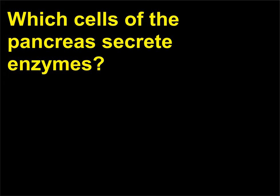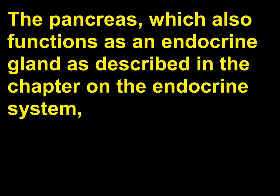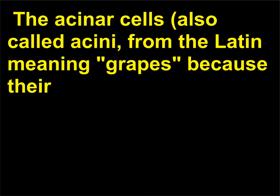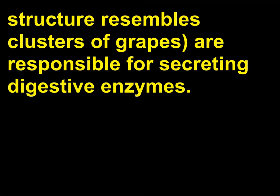Which cells of the pancreas secrete enzymes? The pancreas consists of both endocrine and exocrine cells. The acinar cells — also called acini, from the Latin meaning 'grapes' because their structure resembles clusters of grapes — are responsible for secreting digestive enzymes.